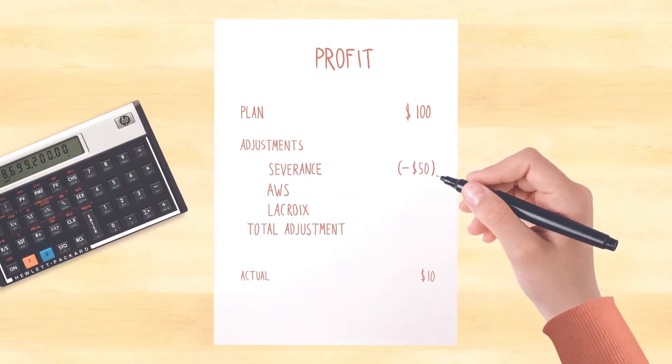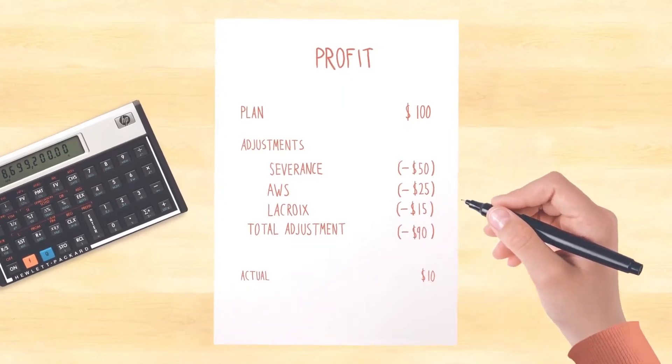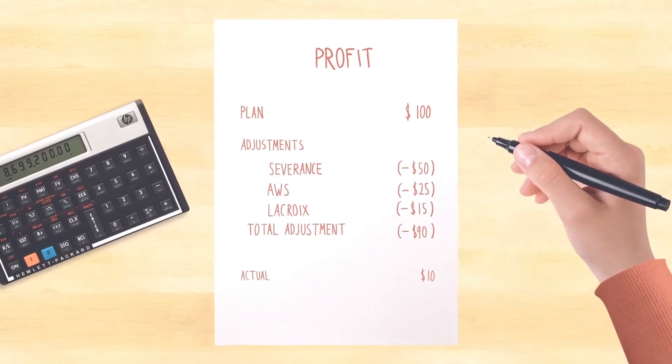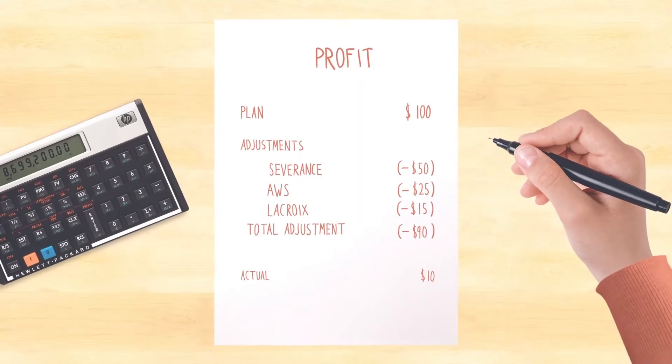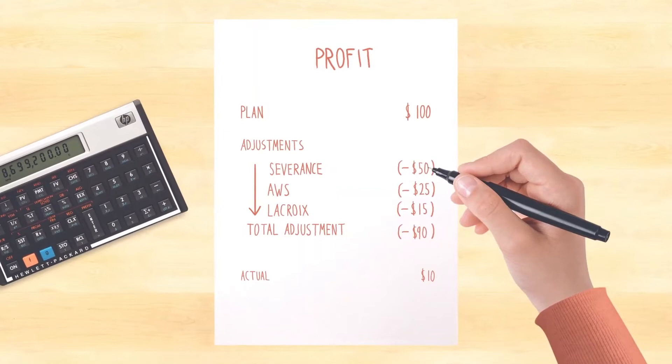Next to each source of difference, write the number difference or the variance attributable to that source. It could be positive or negative. Just make sure you arrange the adjustments in descending order by size. The biggest source of difference should be first.